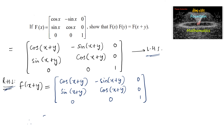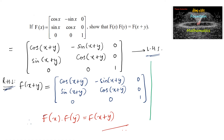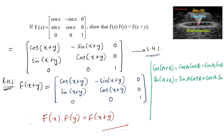Therefore we have proved that f of x into f of y is equal to f of x plus y. We used the trigonometric identities: cos(A+B) equals cos A cos B minus sin A sin B, and sin(A+B) equals sin A cos B plus cos A sin B. These two trigonometric formulas were applied to complete the proof.